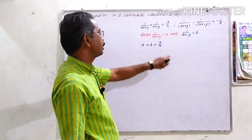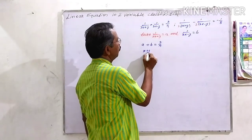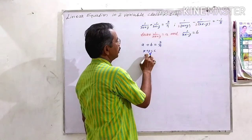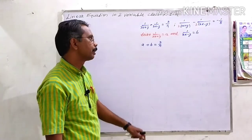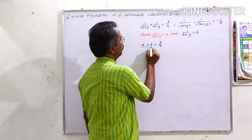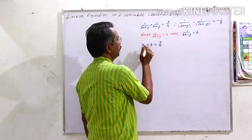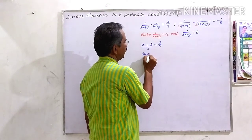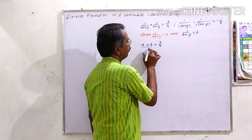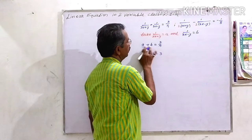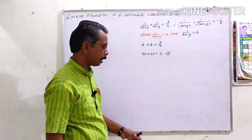Here we have a fraction, so we require it in the form ax plus by equal to c. By cross multiplication: 4 multiplied by a gives 4a, plus 4 multiplied by b gives 4b, equal to 1 multiplied by 3, which is 3. This is our equation number 1.